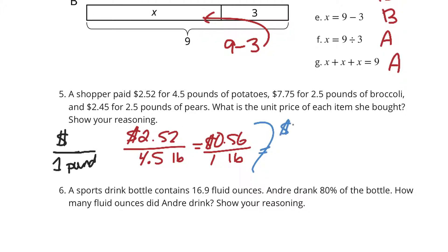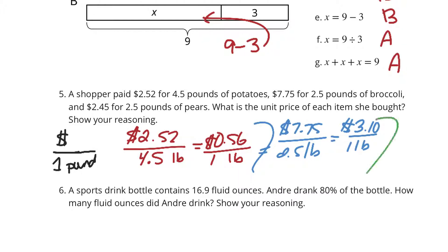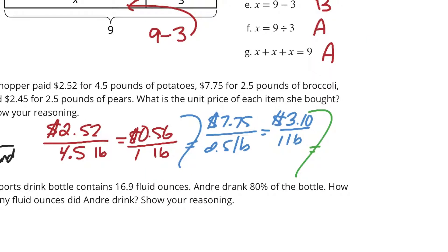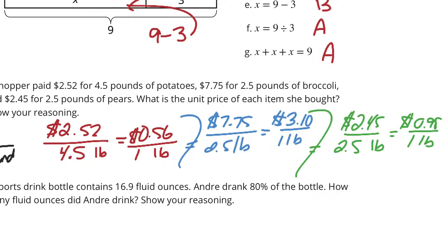For broccoli: $7.75 divided by 2.5 pounds. When you take $7.75 and divide it by 2.5, you get $3.10 per pound. And lastly, the $2.45 for 2.5 pounds of pears. Divide this and you get 98 cents for 1 pound. And so that's just the unit price for each item.